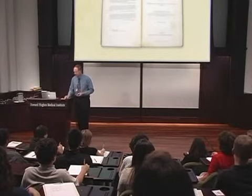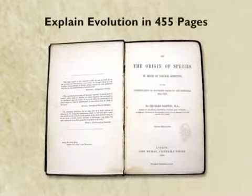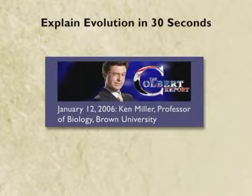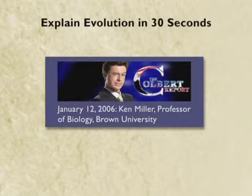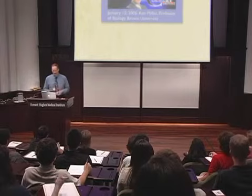But that would take a little long. So I thought, well, explain evolution in 455 pages — too long. We need a shorter time period. How about we explain evolution in 30 seconds, of the sort that a poor, unsuspecting scientist might be asked to do if he went on the Colbert Report with Stephen Colbert. So here you're going to hear an explanation of evolution in 30 seconds.